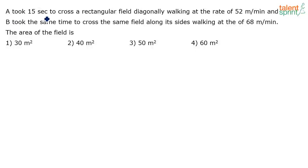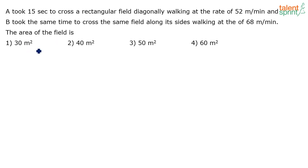A took 15 seconds to cross a rectangular field diagonally walking at the rate of 52 meters per minute, and B took the same time to cross the same field along its sides walking at the rate of 68 meters per minute. The area of the field is — options given are 30 meters squared, 40 meters squared, 50 meters squared, or 60 meters squared.